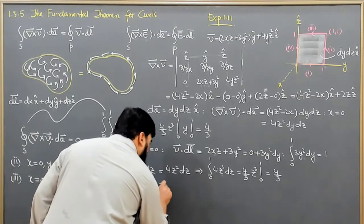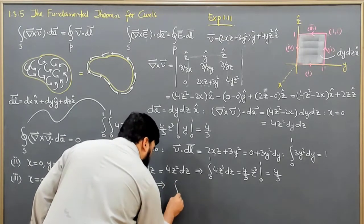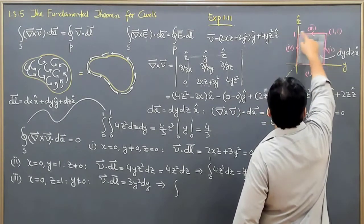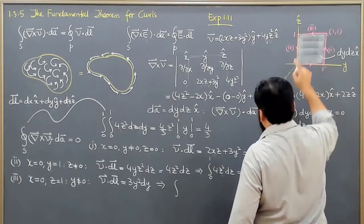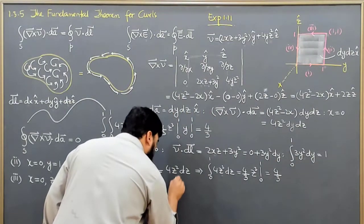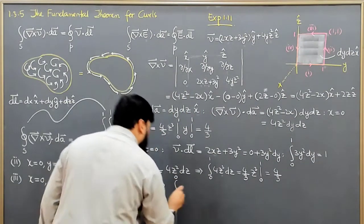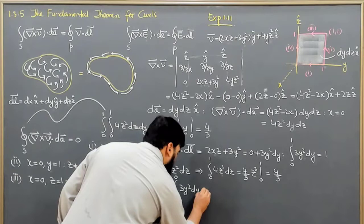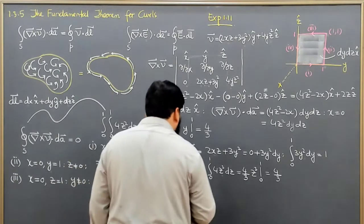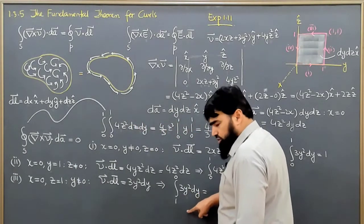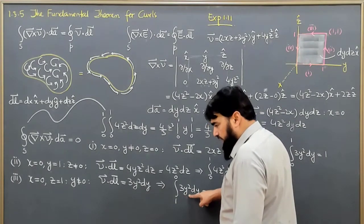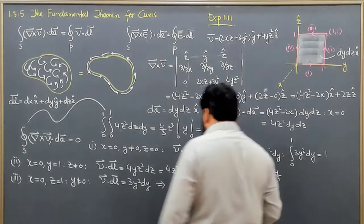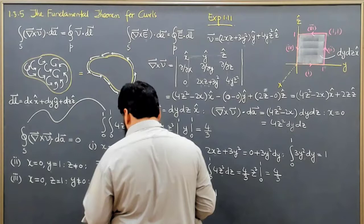The integral is not from 0 to 1 but from 1 to 0, because y starts at 1 and goes to 0 on this path. Integrating 3y squared dy from 1 to 0, the y cubed over 3 term gives us 3 cancels and evaluating from 1 to 0 gives minus 1.